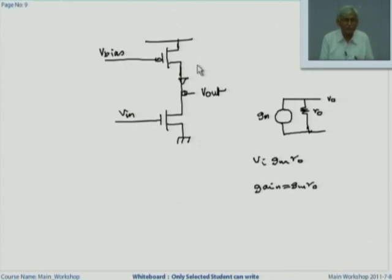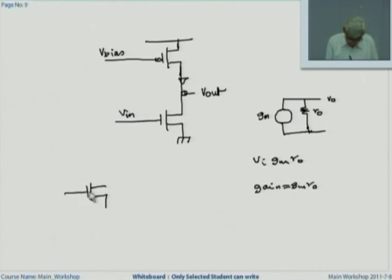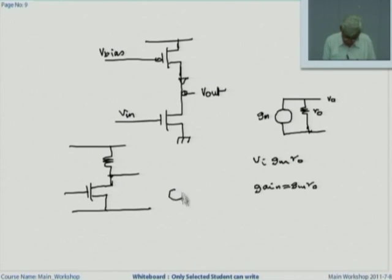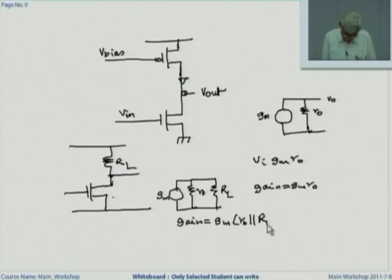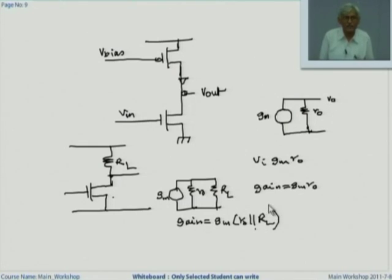So, this is the simplest case in which we have got maximum possible gain, because we are using a current source. I could have designed the same thing in a more familiar amplifier with a resistor and take the output from here. Notice that now the equivalent circuit will be gm R, R0. In parallel with this will be the load transistor. Therefore, in this case the gain will be gm times R0 parallel RL, which is always smaller. So, by using a current source, I can make a high voltage gain amplifier. This is just a quick example of how we can use current sources in actual amplifiers.